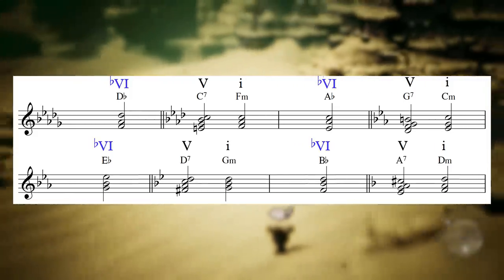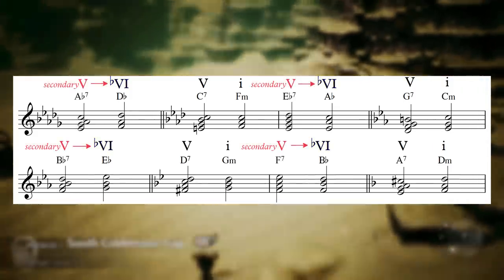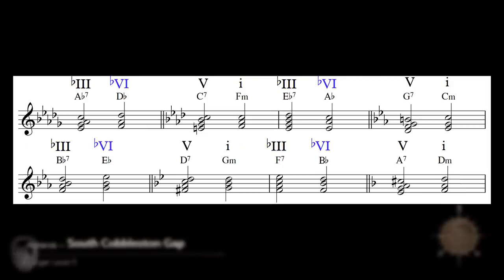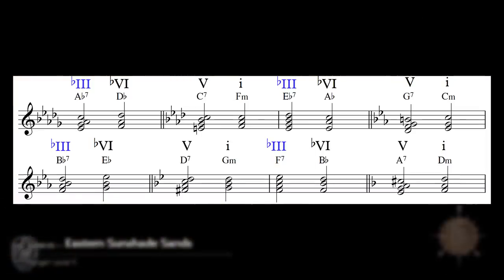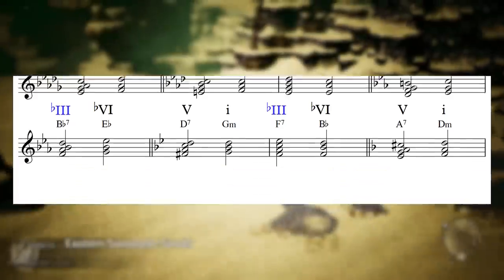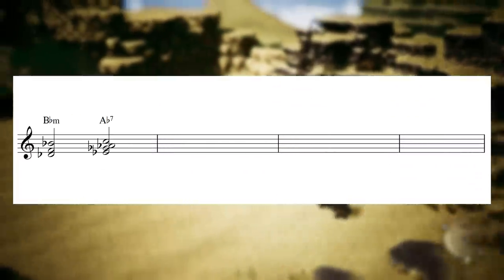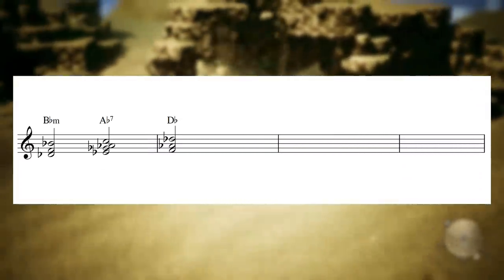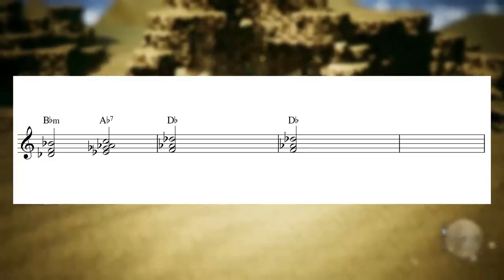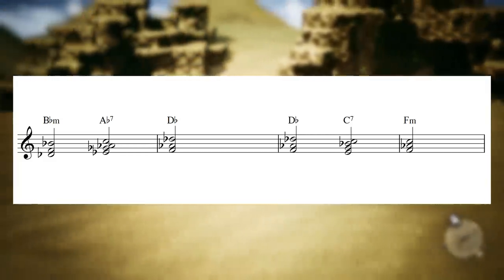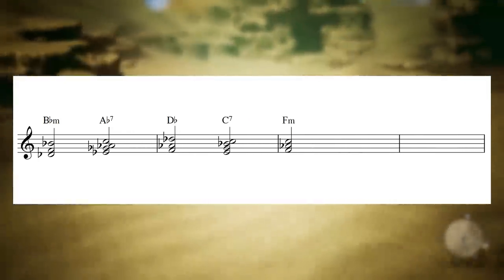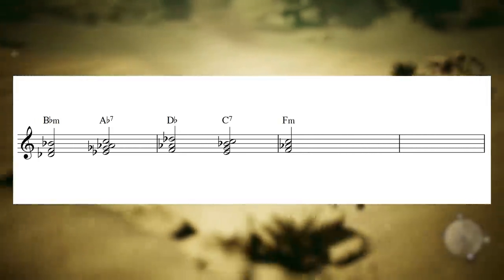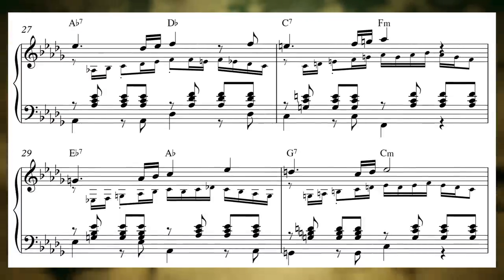Each b6 chord in the cycle is preceded by its secondary dominant chord, making it a series of b3-7 to b6 to 5 to 1 progressions. But these b3-7 chords each also fit perfectly with the key of the chord that came before it. So, Bb minor to Ab7 to Db is a perfectly normal cadence in the key of Bb minor, and Bb to C7 to F minor is a perfectly normal cadence in the key of F minor. Pivoting on the middle chord of this progression chains these keys together almost seamlessly, even though they're happening one after another so quickly.